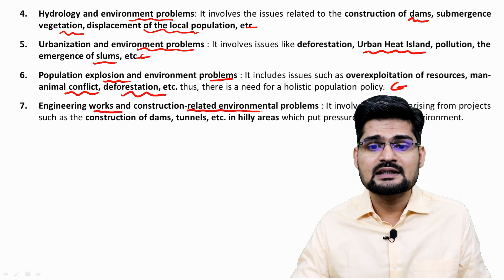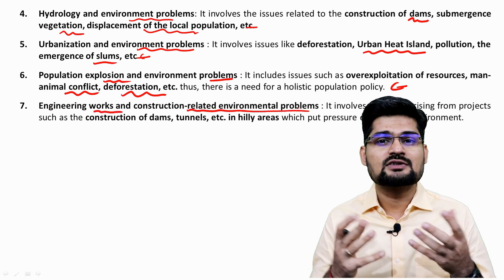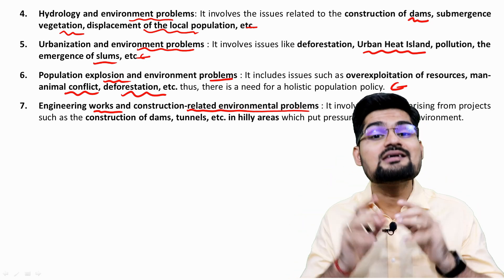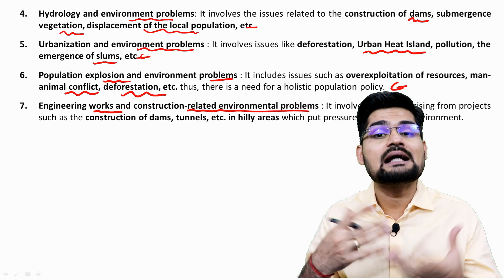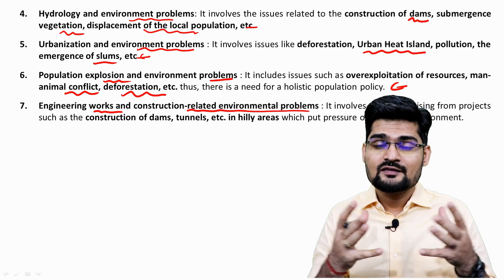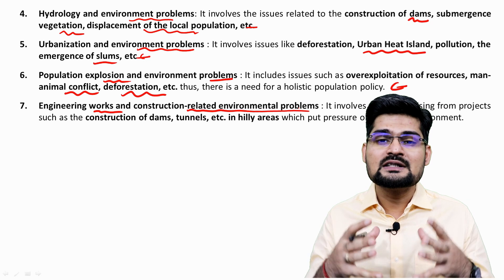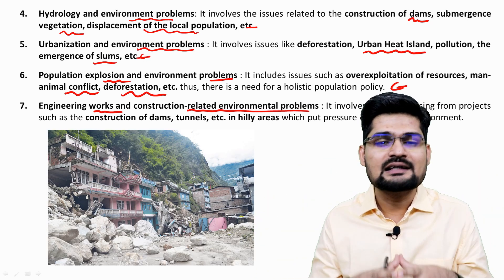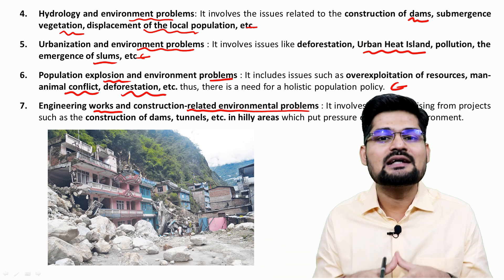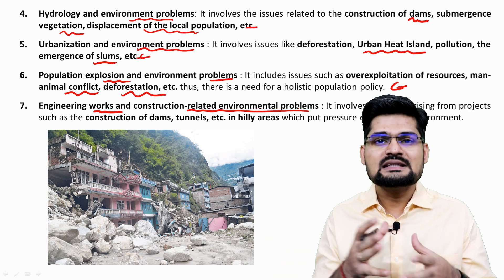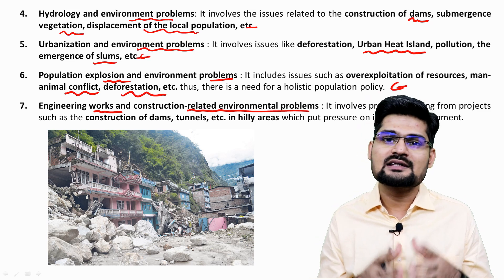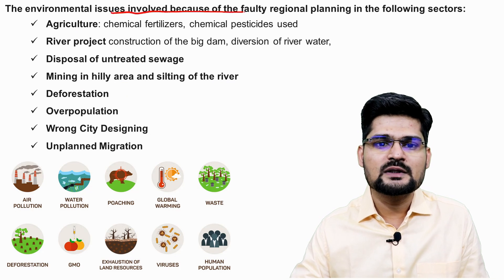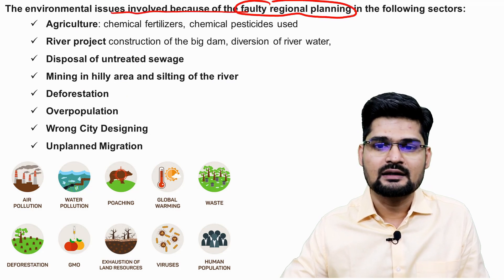Engineering works and construction-related environmental problems are the seventh area. Construction of dams, tunnels, roads, and buildings — and many times non-scientific constructions — lead to a lot of problems. Every year during the Indian monsoon, the foothills of the Himalayan region experience landslides. Many people have constructed houses within the catchment area of rivers, and when floods come there is a problem.